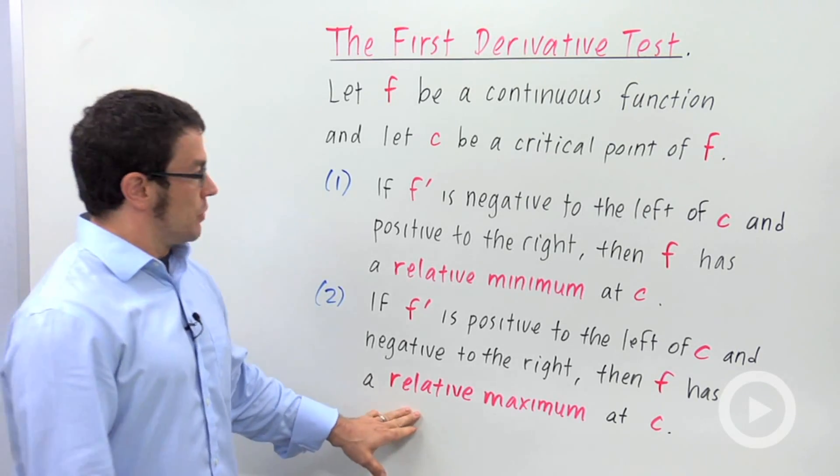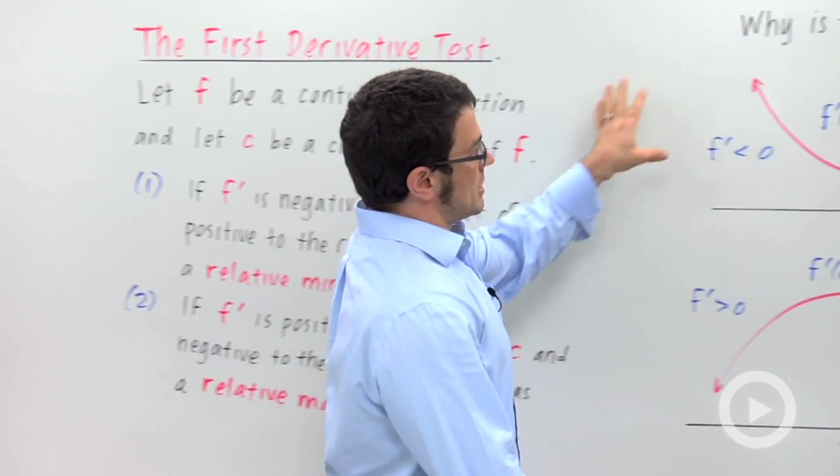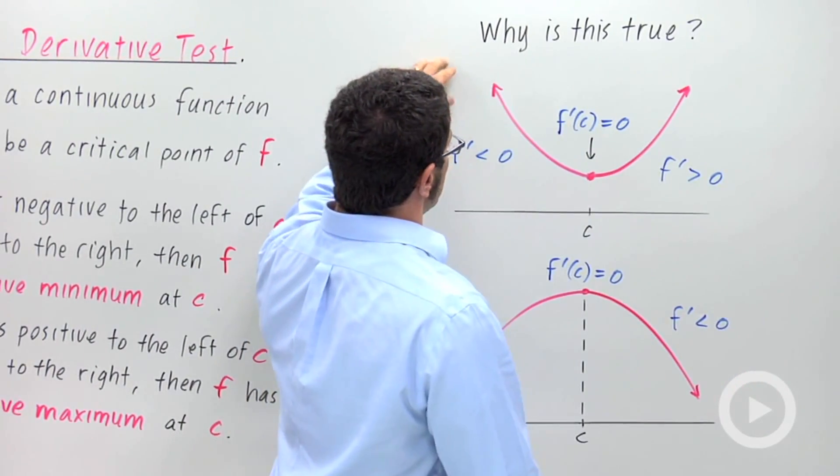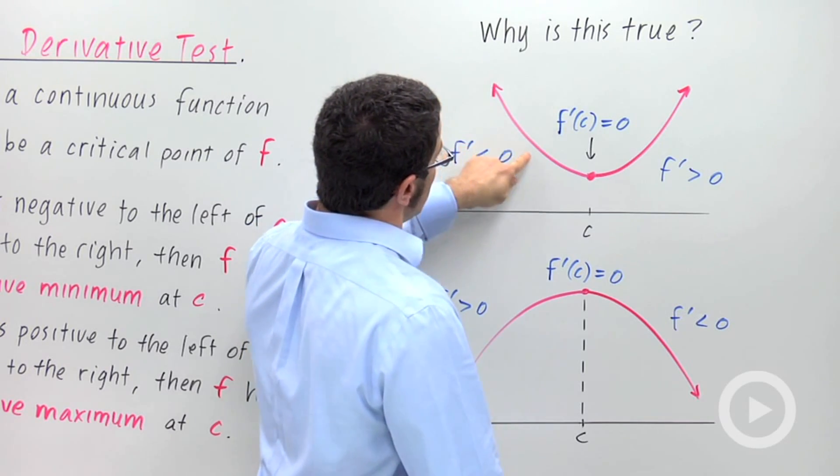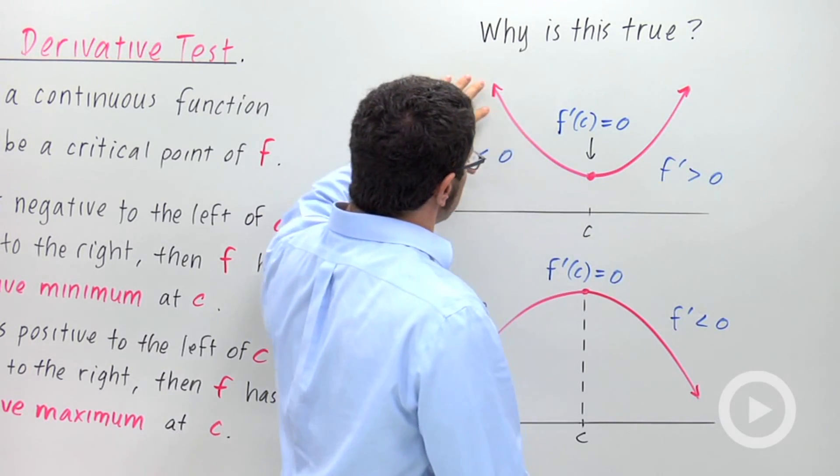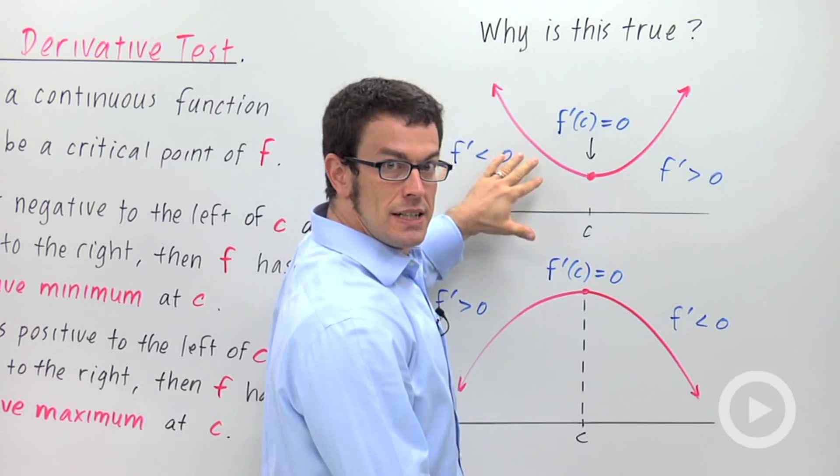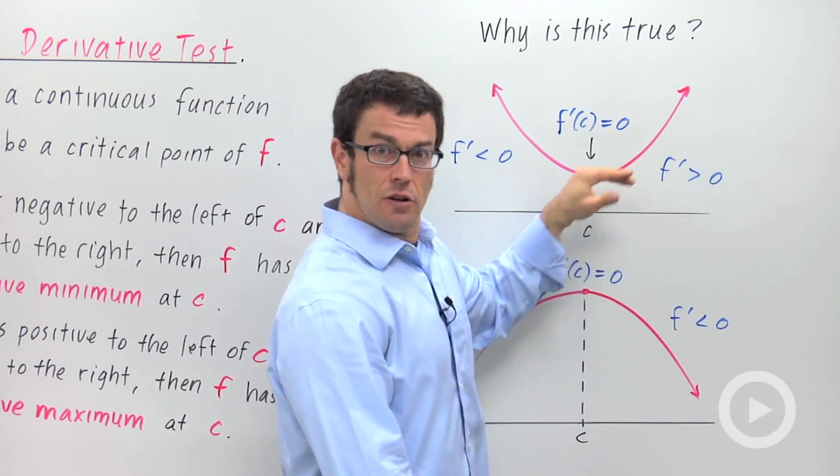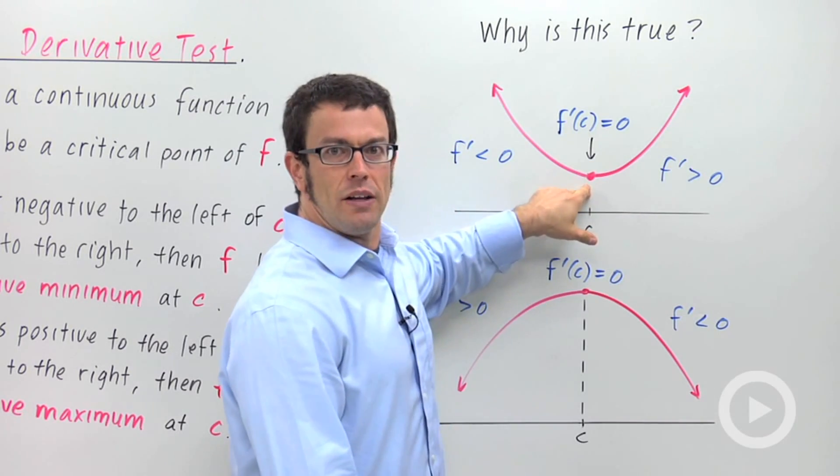Now let's see why this is true. I have drawings of this situation here. The first situation, remember, f prime was negative to the left of c and positive to the right. That means that the function f is decreasing to the left and increasing to the right. So it makes sense that you should have a relative minimum here.